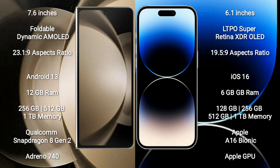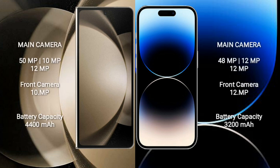Samsung Galaxy Z Fold 5 features a triple rear camera setup: 50MP plus 10MP plus 12MP, and a 10MP front camera. iPhone 14 Pro features a triple rear camera setup: 48MP plus 12MP plus 12MP, and a 12MP front camera.